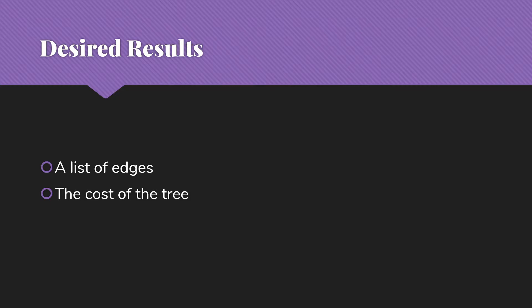So what are we actually looking for? We're looking for a list of the edges that define this minimum spanning tree and generally what the cost of the tree is. So that's our goal. What are the edges? What do they cost?